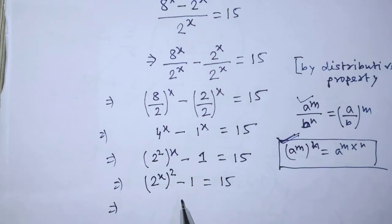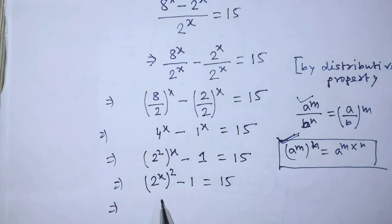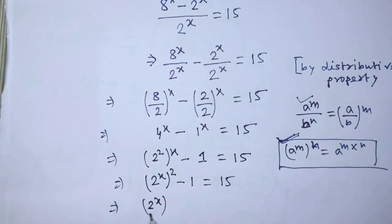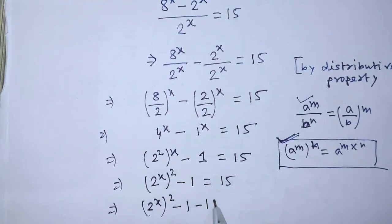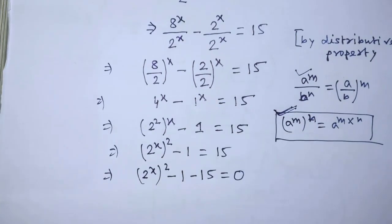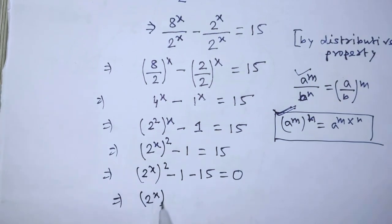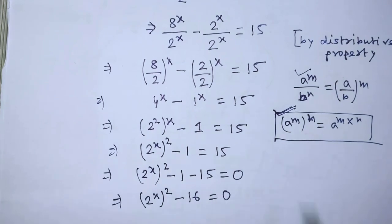To find the value of x from this equation, we have to transpose 15 from the right hand side to the left hand side. Then the left hand side will become 2 to the power x, whole squared, minus 1 minus 15 is equal to 0. So we can write 2 to the power x, whole squared, minus 16 is equal to 0.